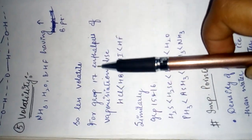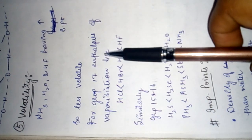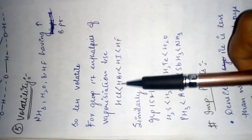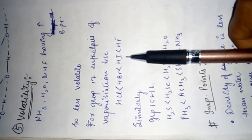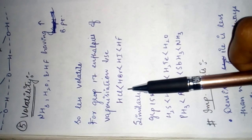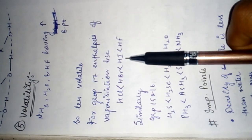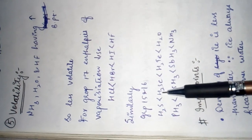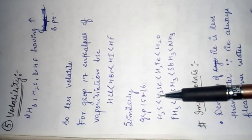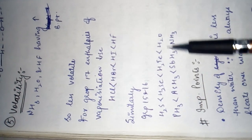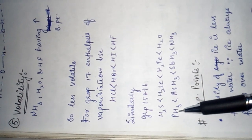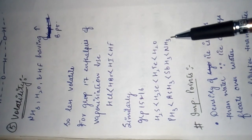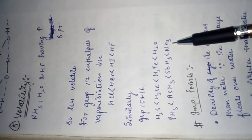Volatility: ammonia, water, and HF have high boiling points, so they are less volatile. For group 17, enthalpies of vaporization: HCl has less enthalpy of vaporization than HBr, then HI, then HF. Similarly for groups 15 and 16: H₂ has less enthalpy of vaporization than H₂S, and so on. Ammonia has the greatest enthalpy of vaporization.